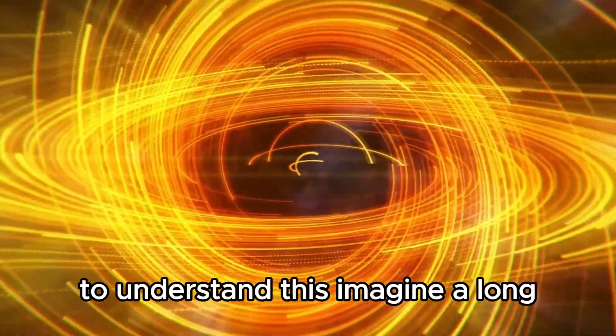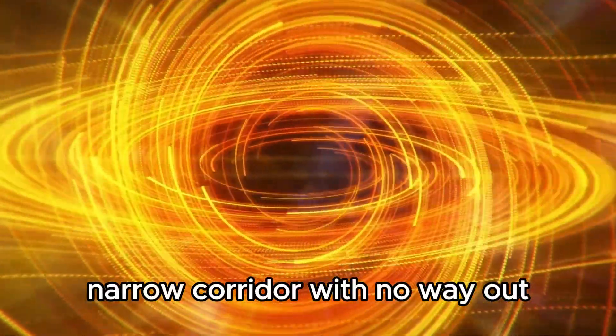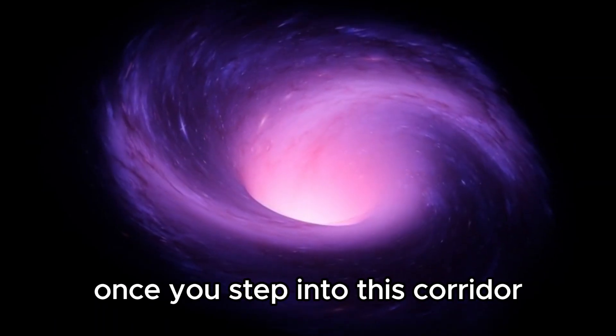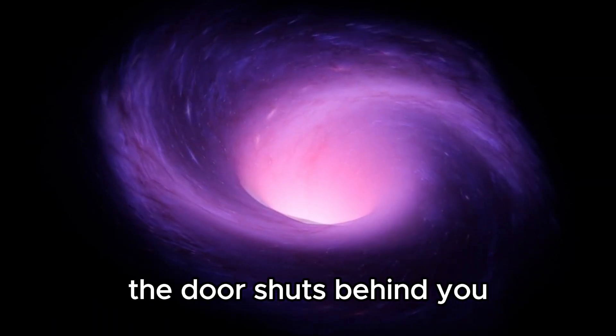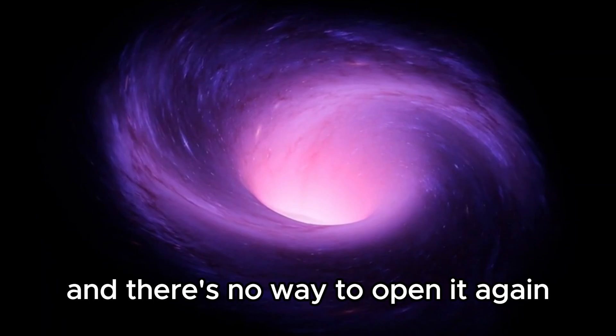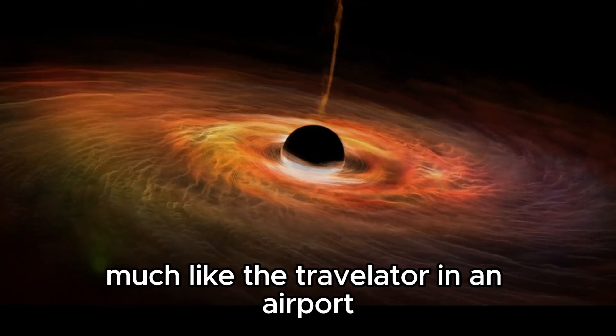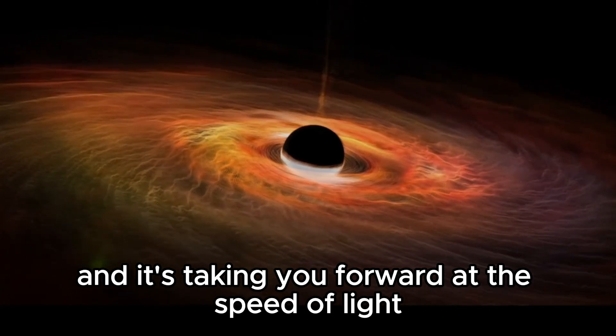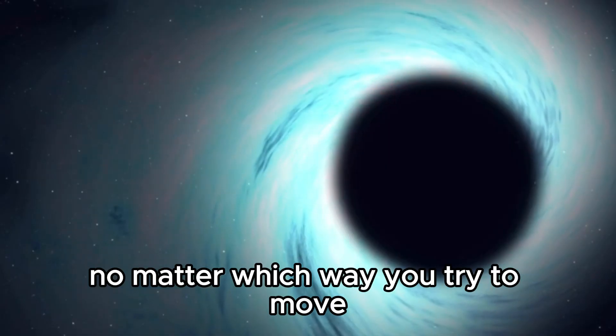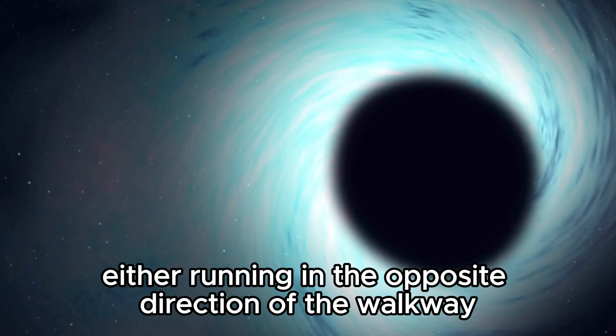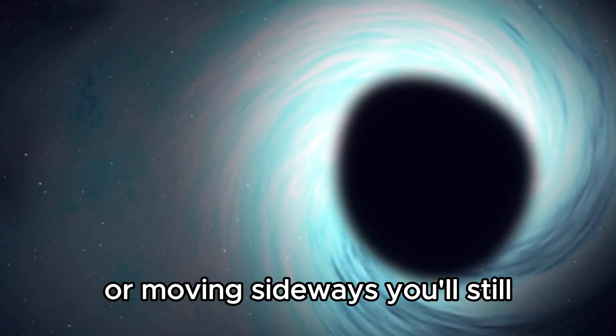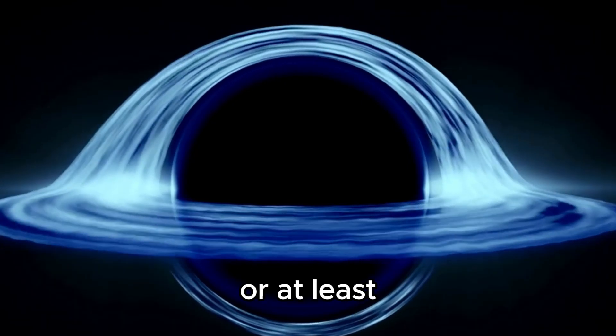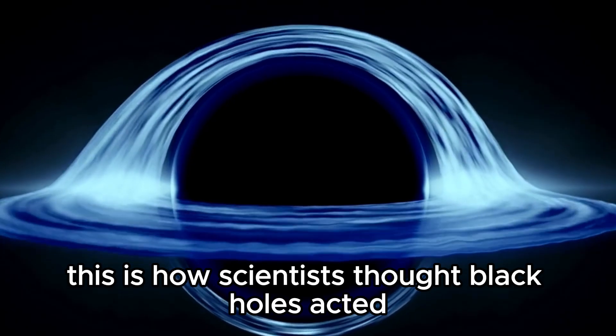To understand this, imagine a long, narrow corridor with no way out except through a door at the end. Once you step into this corridor, the door shuts behind you, and there's no way to open it again. The corridor has a moving walkway, much like the travelator in an airport, and it's taking you forward at the speed of light. No matter which way you try to move, either running in the opposite direction of the walkway or moving sideways, you'll still end up being carried forward by the walkway. Or at least, this is how scientists thought black holes acted.